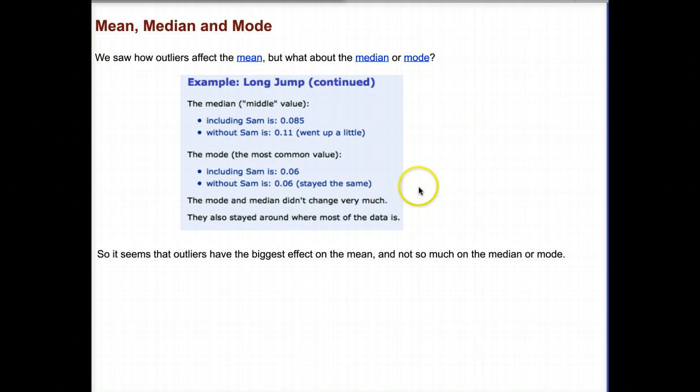Let's examine the mean, median, and mode. We saw how the outliers affected our average. But what about the median and mode? Do the outliers affect our median and mode? So if we examine the median, which remember is the middle value, in order to find the middle value, you need to make sure that you order the data and then count and find the middle value. If there's two middle values, then you find the average of the two middle values. So if you include Sam, the median is 0.085. And without Sam, it's 0.11. So it went up a little bit. The mode, which is the most common value, stayed the same. It didn't change. So if you consider what the outliers affect, it really has a bigger effect on your average and not so much on the median or mode.